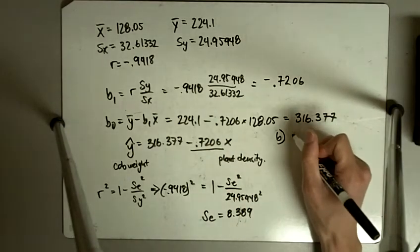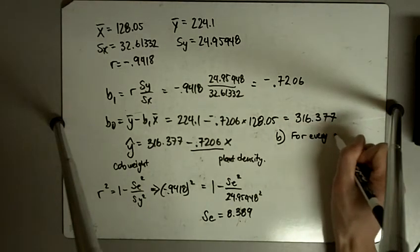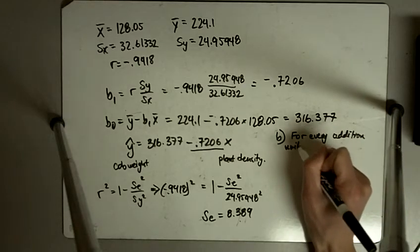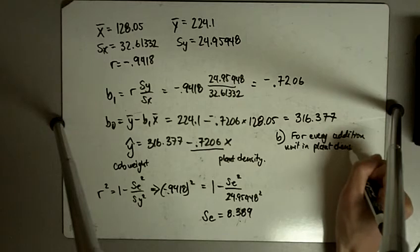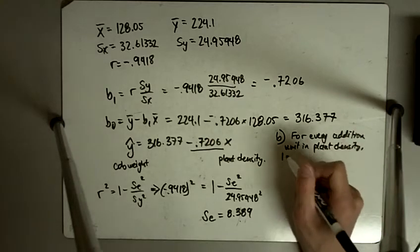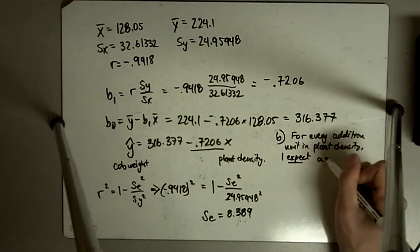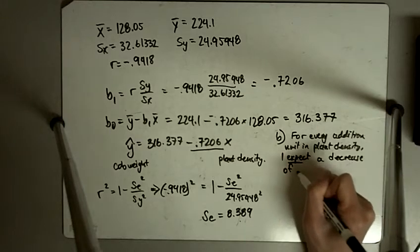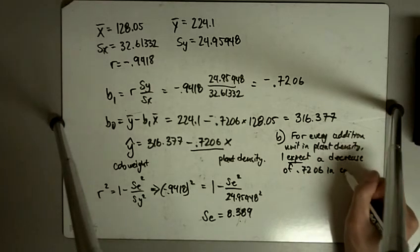So it says, for every additional unit in plant density, okay, I expect or predict a decrease of 0.7206 in cob weight.